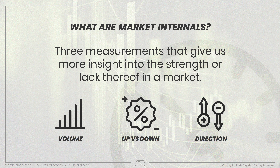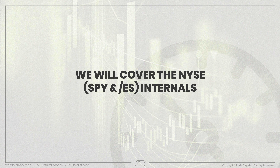This video will focus on the New York Stock Exchange and all of the companies that trade there. The three measurements — you can think of these as peeking behind the scenes and seeing what's happening internally in the markets. The three are: volume, what's up versus down, and current direction. We're going to break all three of these down, show you how to set them up, and how we can actually use some strategies with these internals.